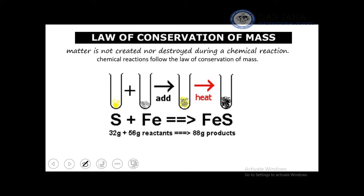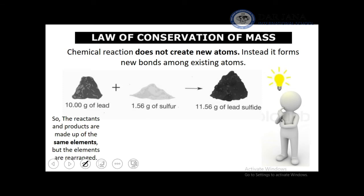For example, when sulfur and iron react they make iron sulfide (FeS). With 32 g of sulfur and 56 g of iron, we expect 80 g of product (32 + 56 = 80 g), showing mass is conserved. Similarly, 10 g of lead reacting with 1.56 g of sulfur gives 11.56 g of lead sulfide — the products' mass equals the reactants' mass.